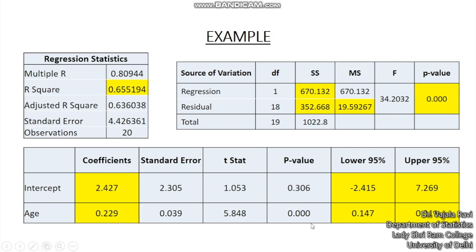And if one wants to know the interval estimates, beta 0 lies between minus 2.414 to 7.269, beta 1 lies between 0.147 to 0.31. So these are the corresponding standard errors of the estimate. So everything is given in the results.